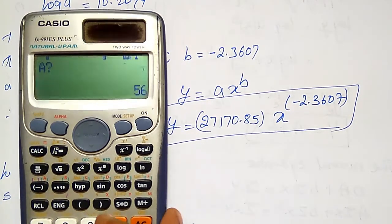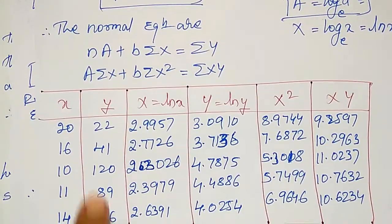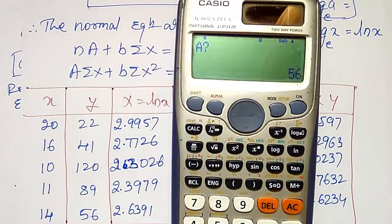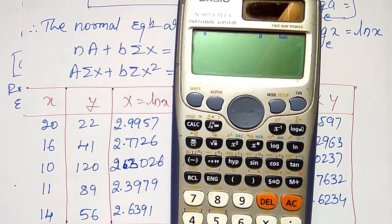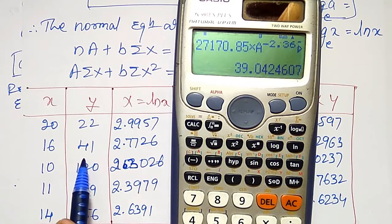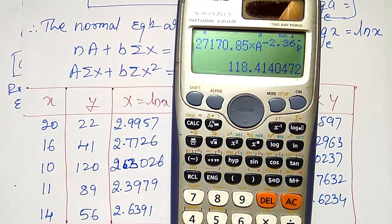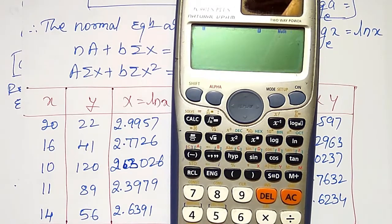Substituting the original x values for verification: for x = 20, y ≈ 23 (actual 22); for x = 16, y ≈ 39 (actual 41); for x = 10, y ≈ 118 (actual 122); for x = 11, y ≈ 94 (actual 89); for x = 14, y ≈ 53 (actual 56). There are small errors, which is expected in curve fitting.